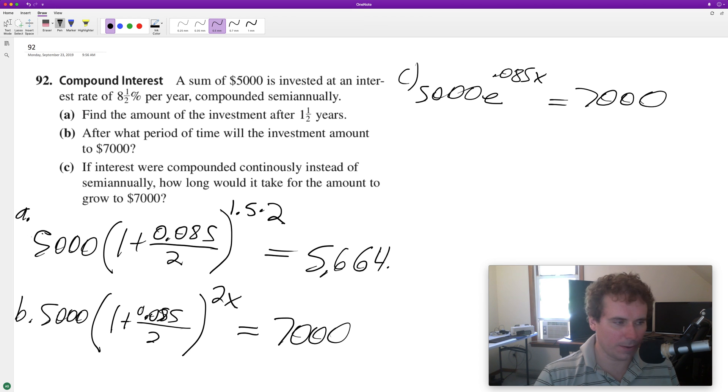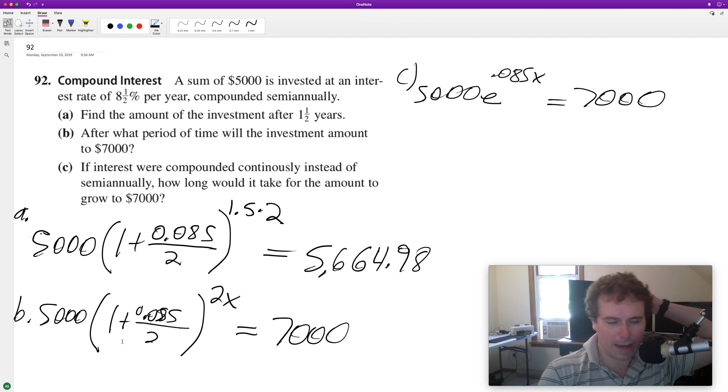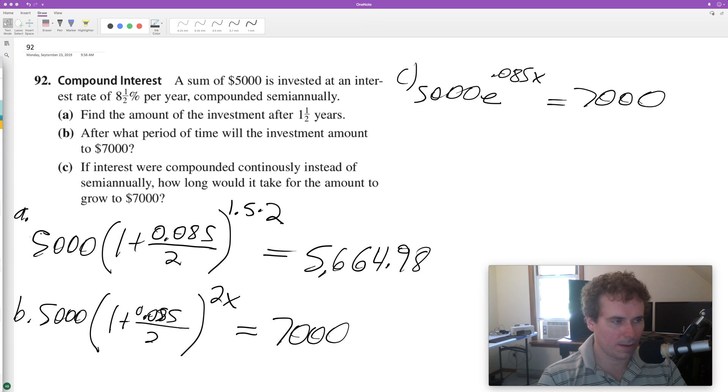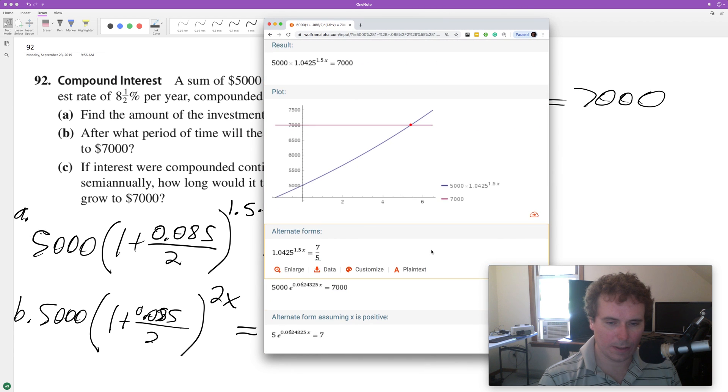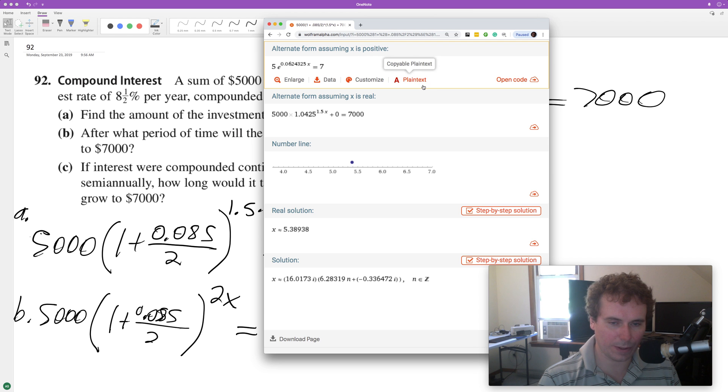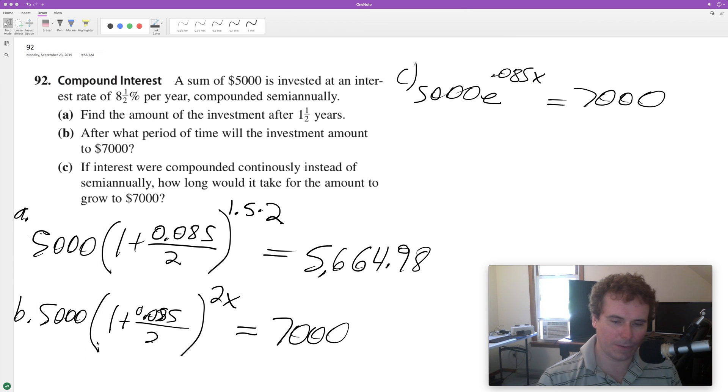How long to reach $7000? With this one, we divide through by $5000, then we take the log of both sides so we get 2x by itself, and then divide the remainder by 2. I'll set this up. That looks like approximately 5.4 years.